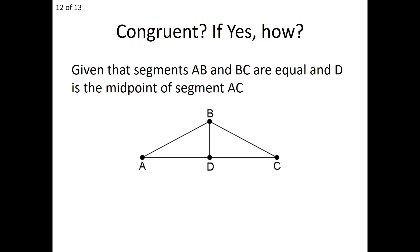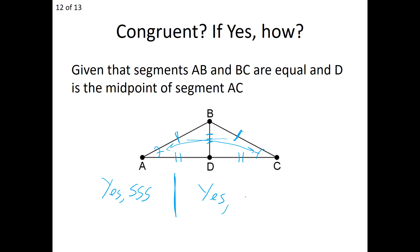A couple more examples. We're given that segment AB and segment BC are equal, and that segment AC is perpendicular to BD. By our perpendicular lines theorem, we also have a right angle, and the two triangles share side BD — which means we have side-angle-side, because all right angles are equal to each other. So we satisfy side-angle-side congruence, and yes, those two triangles are, in fact, congruent by side-angle-side.